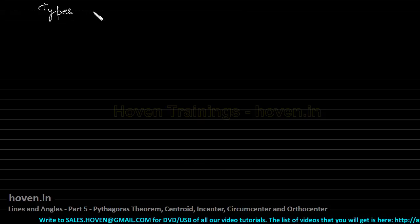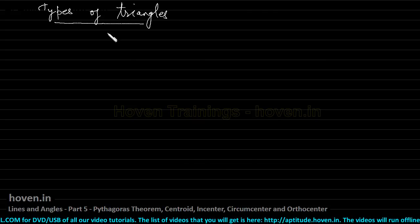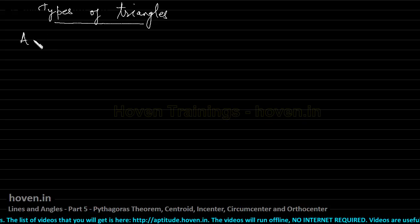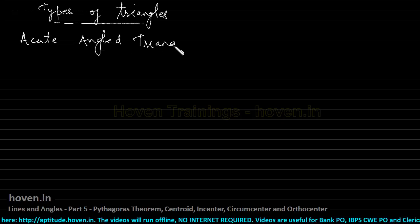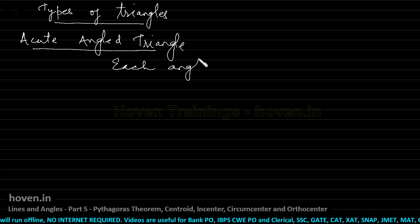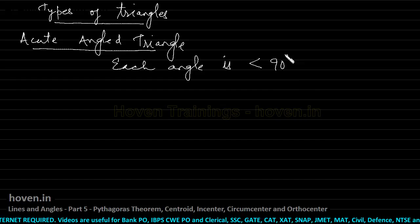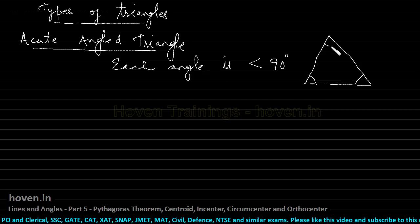Let us now move on to the types of triangles. Questions are always asked in which the definition of each type should be well known to you. The first type is called the acute angled triangle. In this triangle, each angle is less than 90 degrees — this holds for every angle. If I draw such a triangle, each angle is less than 90 degrees.